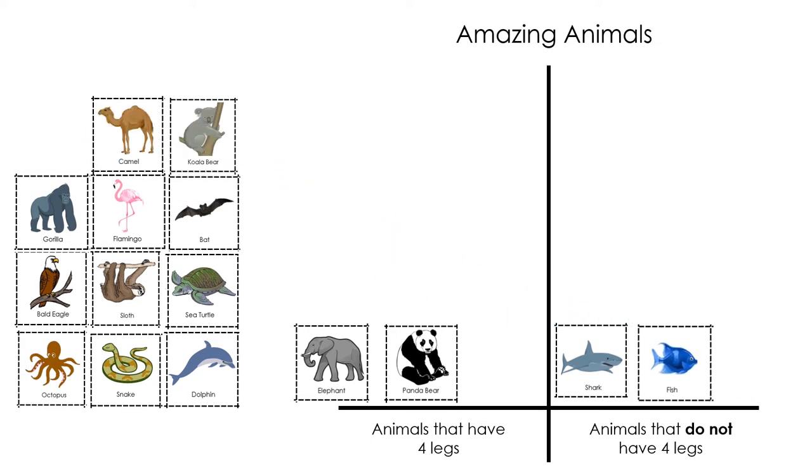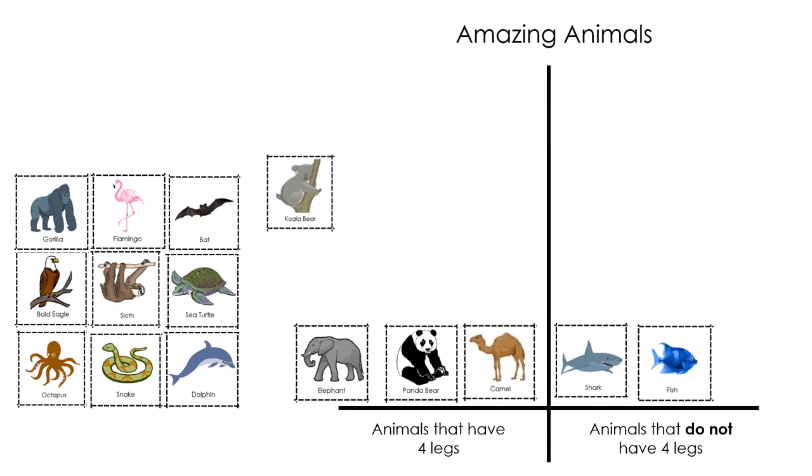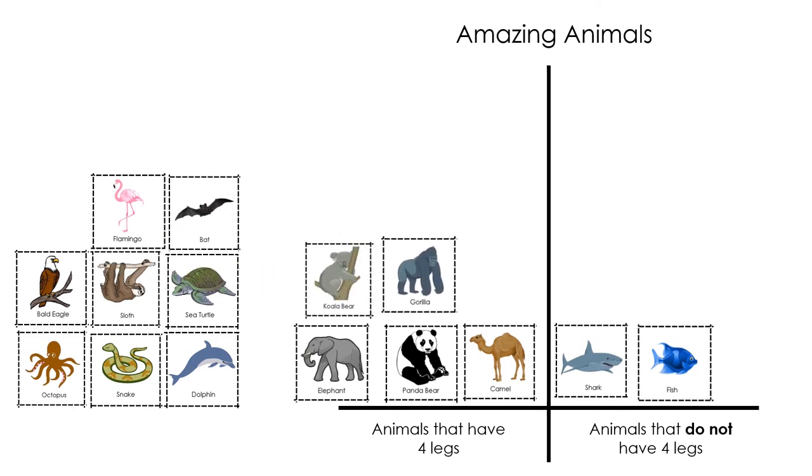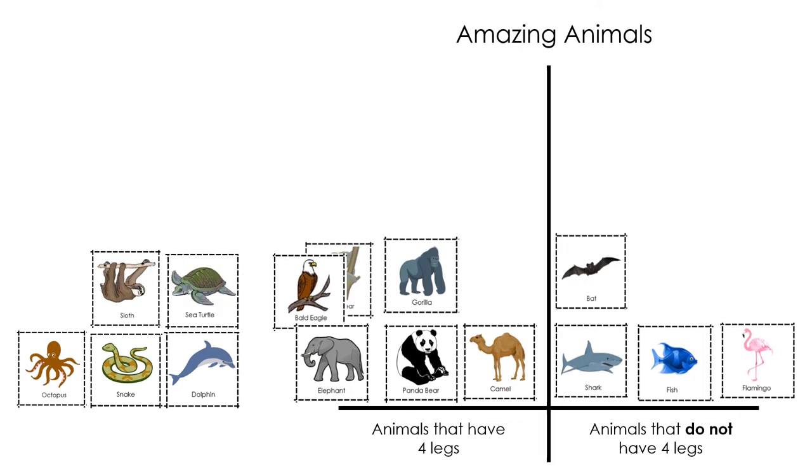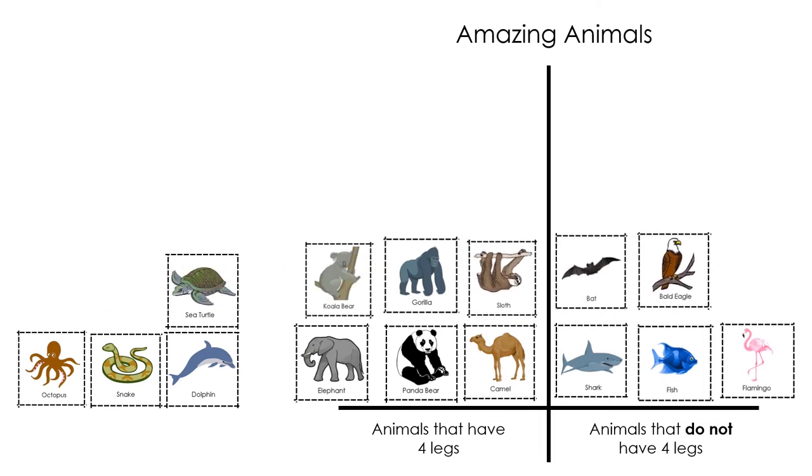Fish and sharks have zero legs. Hmm, a sea turtle has four flippers to help him swim, not four legs.